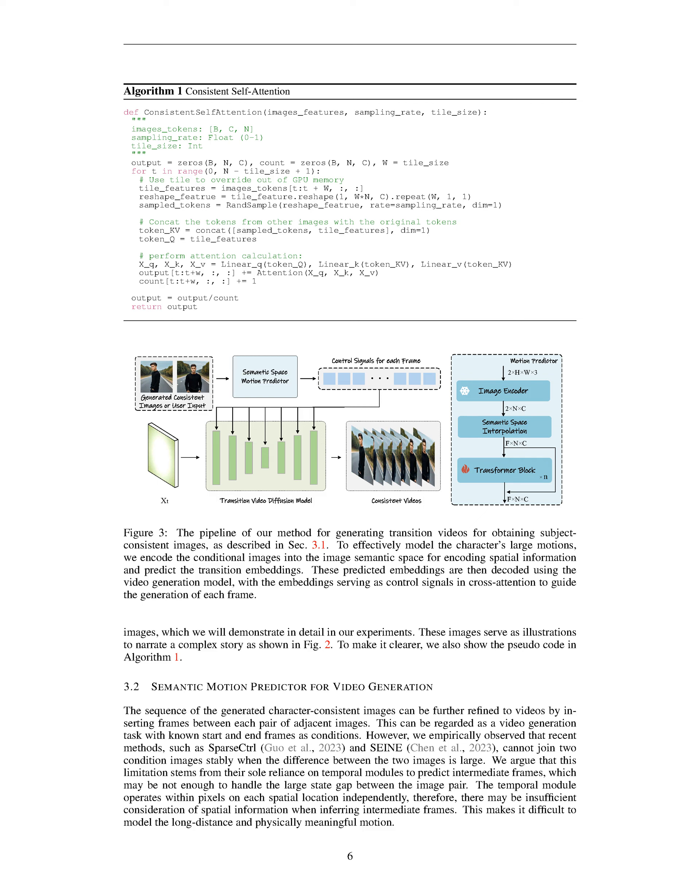In summary, we introduce controllable text-to-image generation methods like ControlNet and T2i Adapter that enhance image generation by incorporating control conditions such as depth maps and pose images. Our focus is on maintaining subject consistency across multiple images to tell a coherent story, achieved through our consistent self-attention approach that enables interactions among image features within a batch. By utilizing self-attention to ensure character consistency during image generation, our training-free method efficiently produces subject-consistent images, crucial for storytelling and video generation.